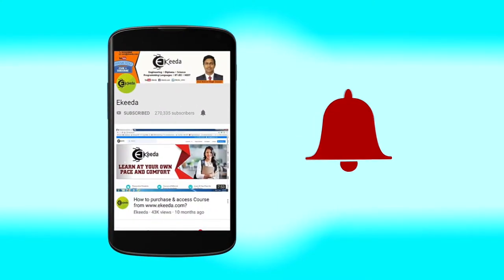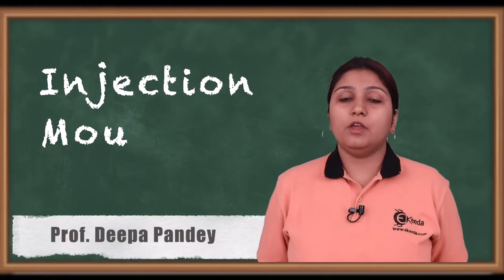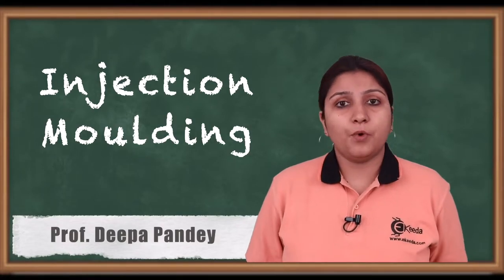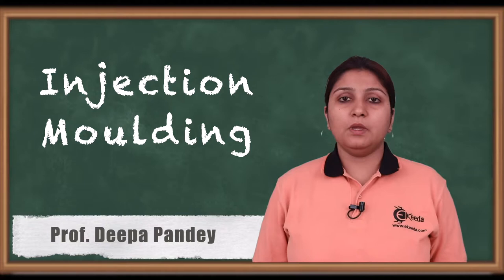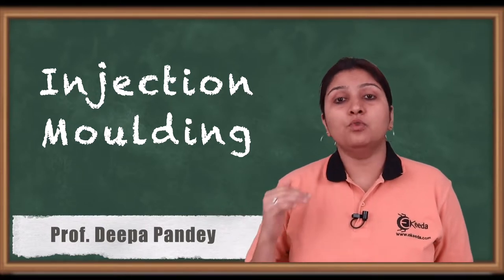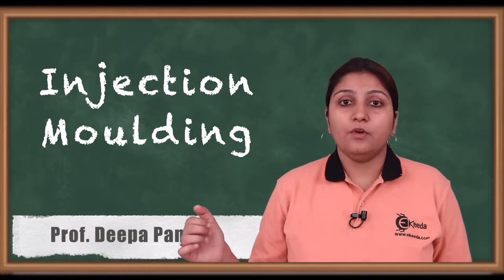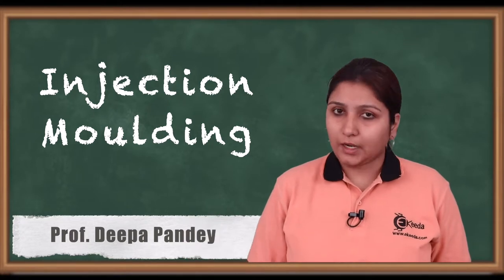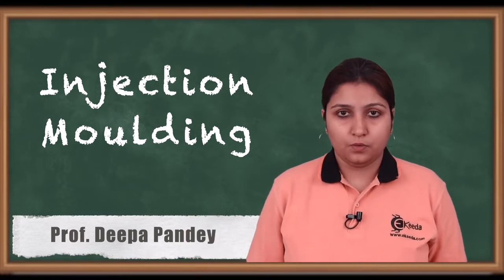Hello friends, today we are going to see an important molding process which is injection molding. The name injection suggests that the mold material is moved through the die cavity in the form of plunger action, and how it is done we are going to see in this video.